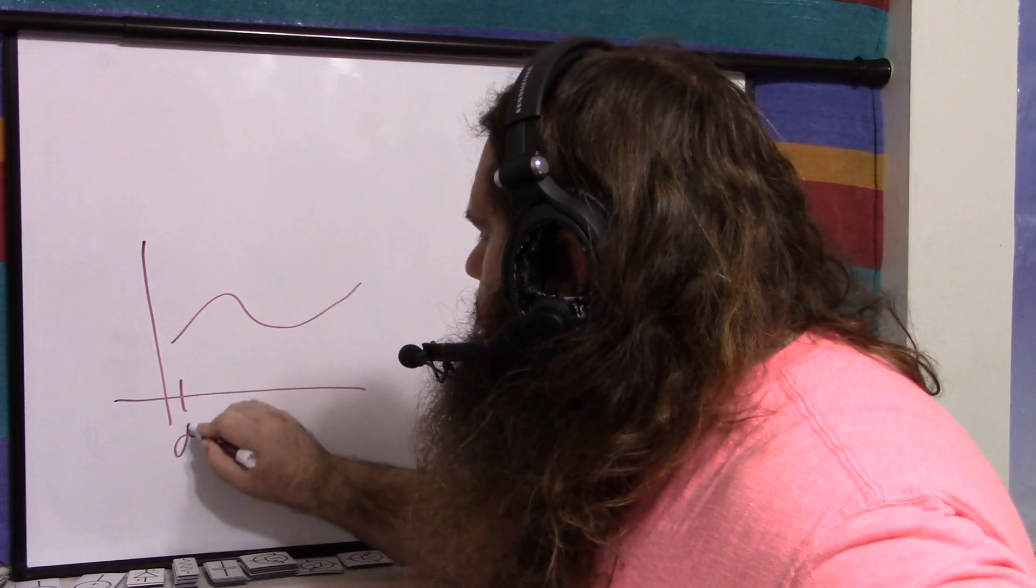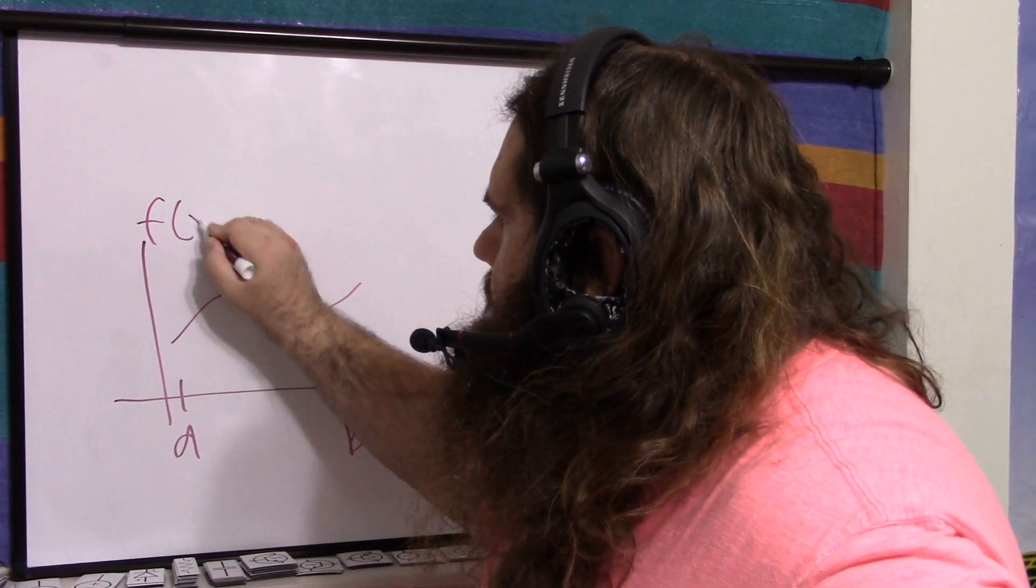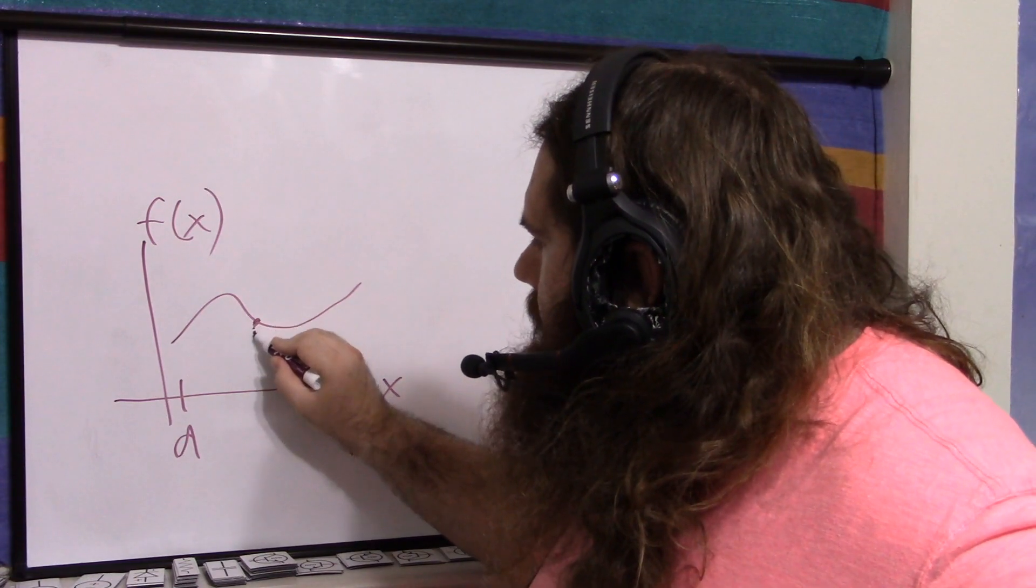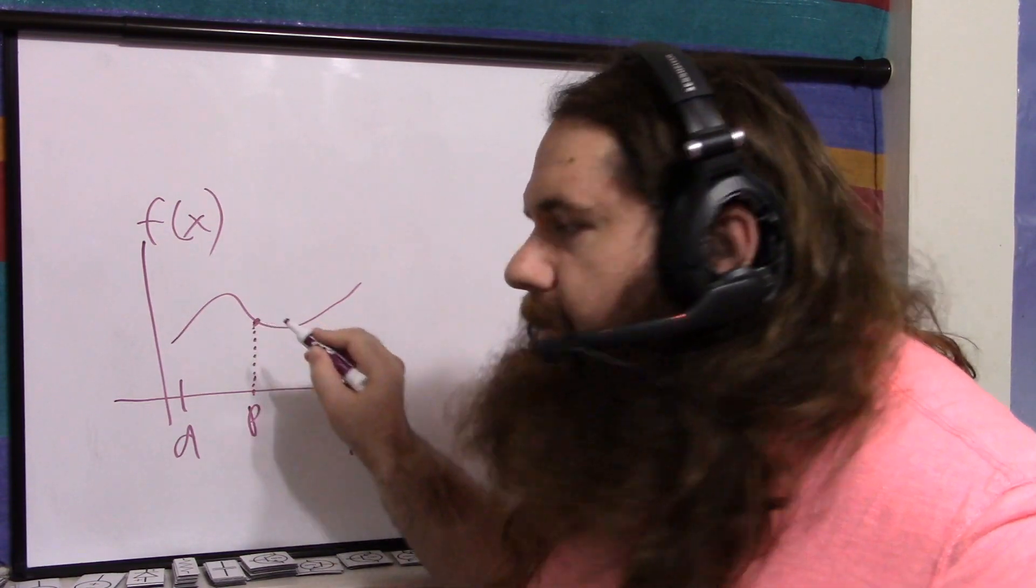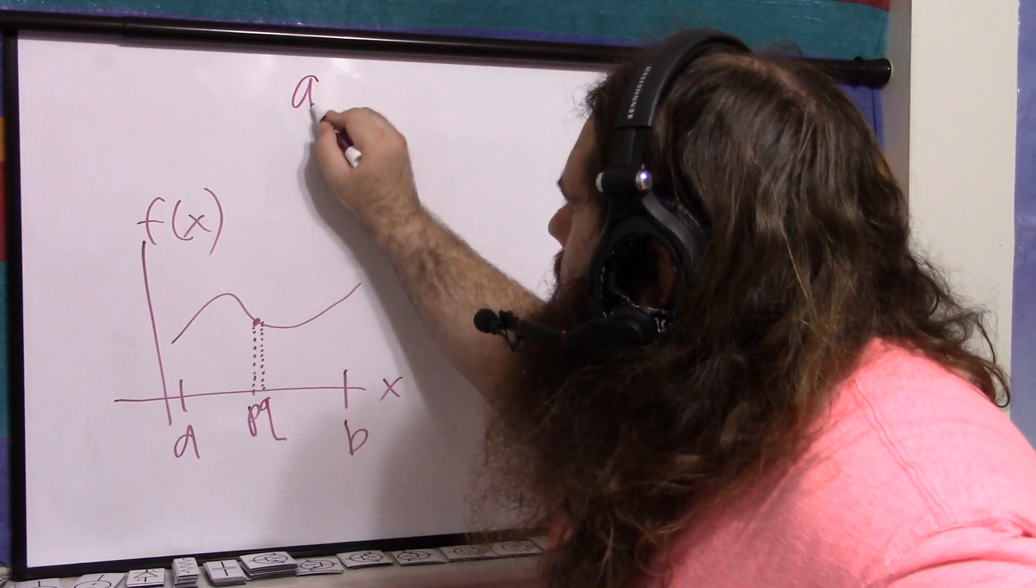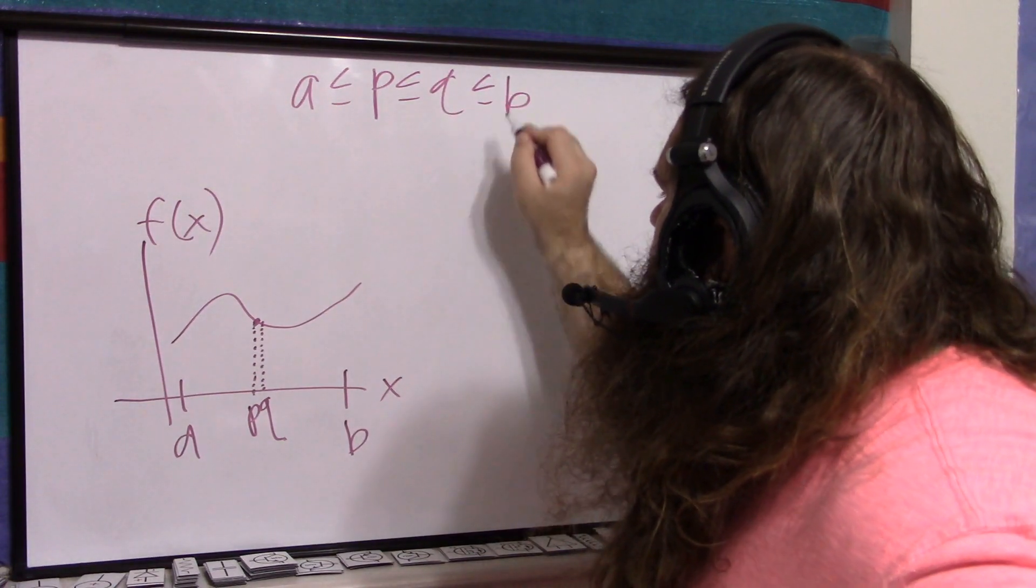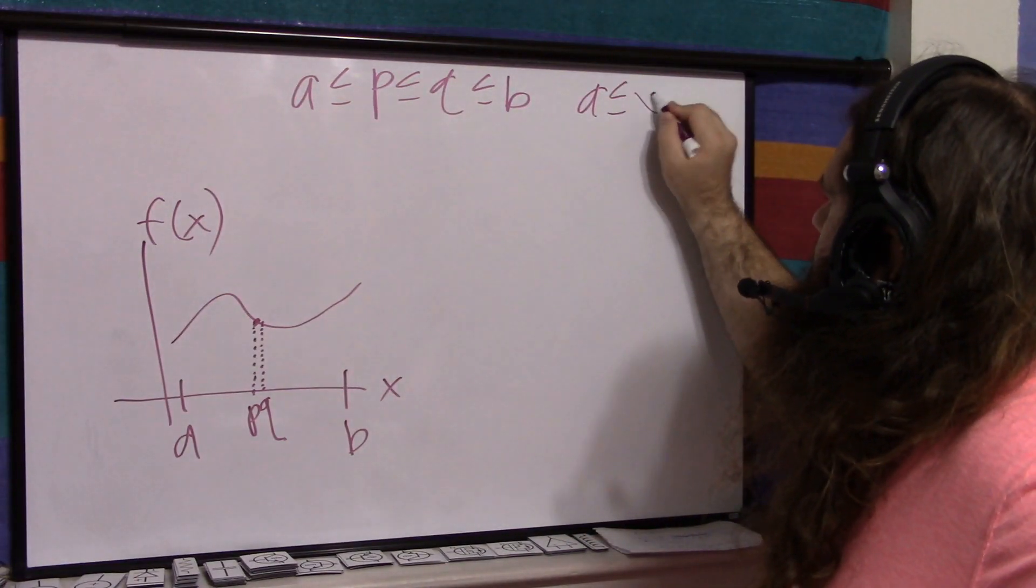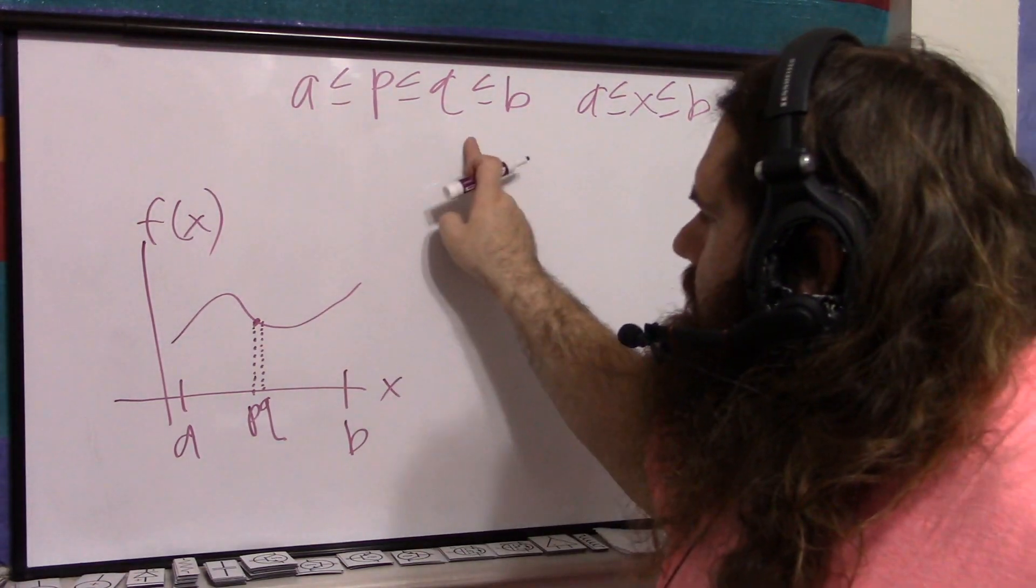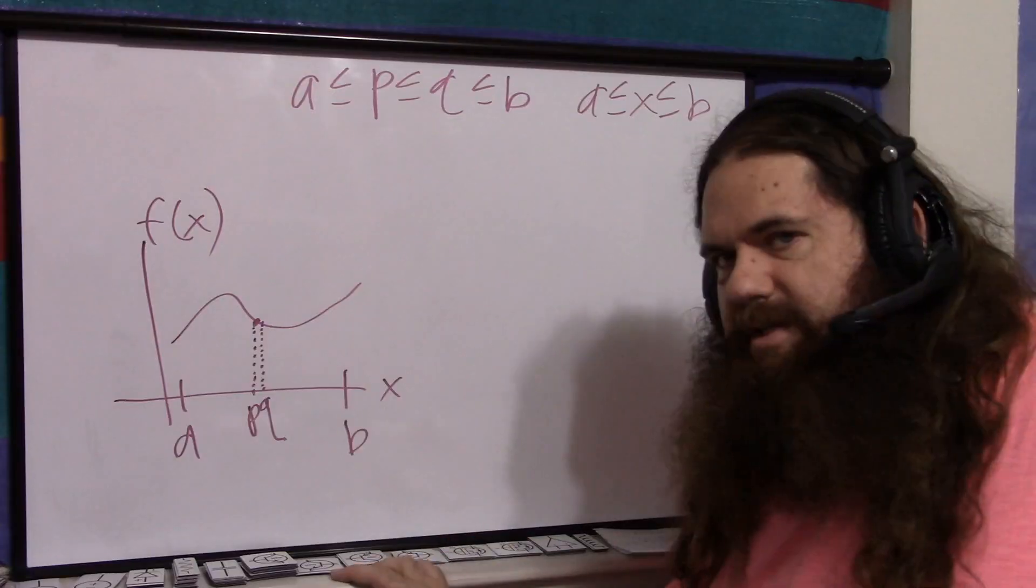We have a function. The function is valid from a to b, so let's say this is x and this is f(x). And we're interested in the slope of the function at a particular spot. So we'll call that spot p, and then we'll go just a little bit over, just a tiny bit, and we'll call this q. So a less than or equal to p, less than or equal to q, less than or equal to b. And of course a less than or equal to x, less than or equal to b. x is a value within the valid a to b range, and p and q are in that range as well. a always comes before b, p always comes before q.